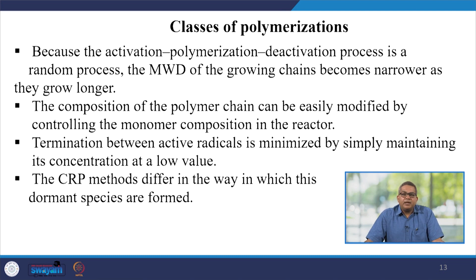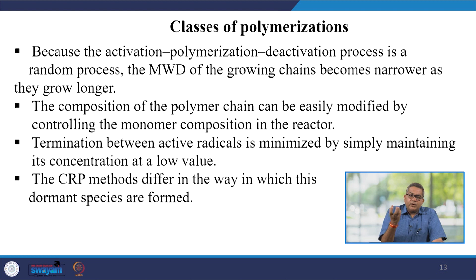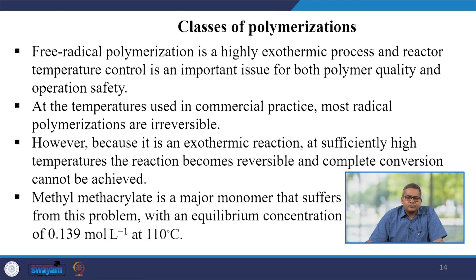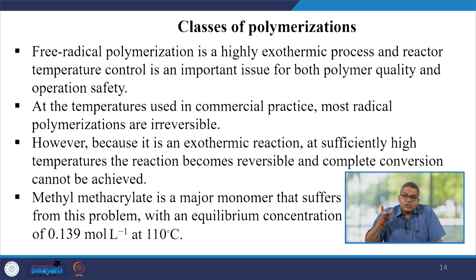The composition of the polymer chain can be easily modified by controlling the monomer composition in the reactor. The termination between active radicals is minimized by maintaining their concentration at a low value, because at the right time you need to truncate the growth of the polymer chain. That is why the concentration of active radicals is very important — if you have a high value, the termination reaction would be very difficult. The CRP methods differ in the way which these dormant species are formed. Free radical polymerization is highly exothermic in nature, and reactor temperature control is very important.